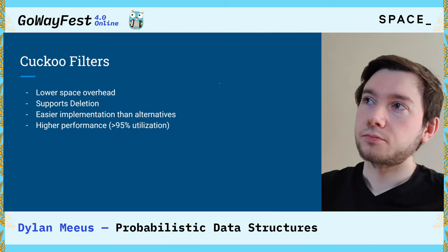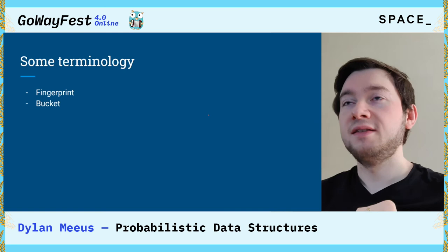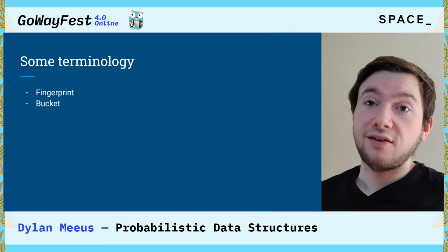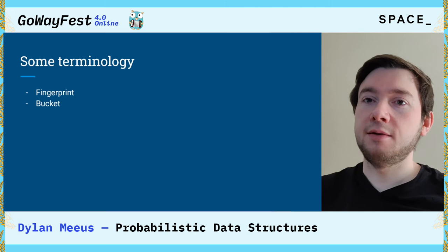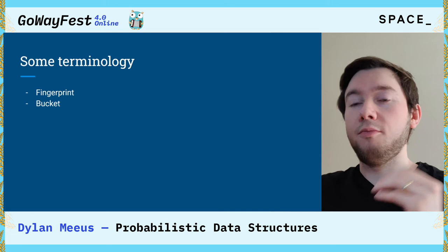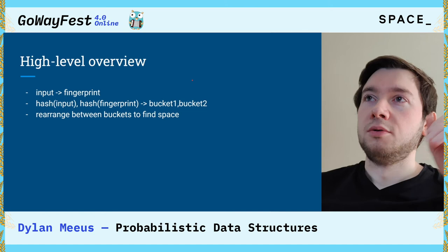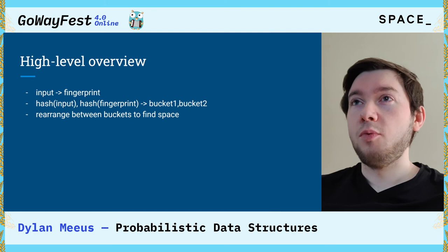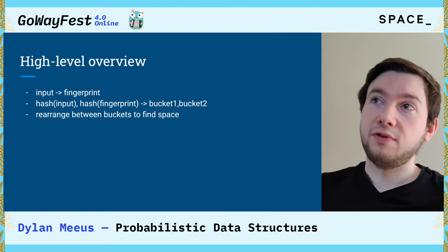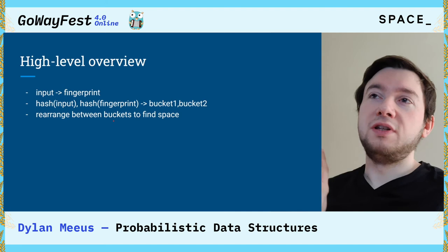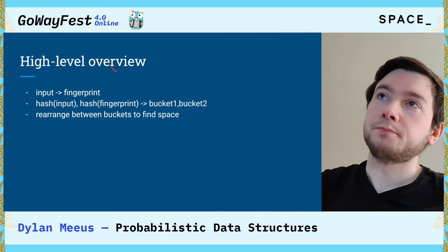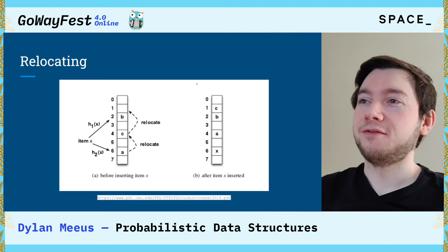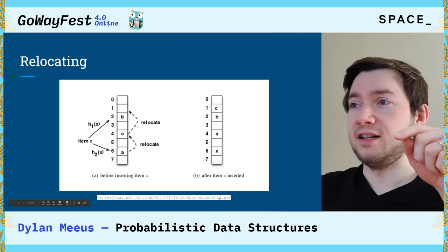Some terminology: a fingerprint is a unique identifier for a username — not the username itself but an identifier of it. A bucket can be thought of as a bucket in a HashMap sense, where each bucket contains multiple entries and our map has multiple buckets. At a high level, we need to generate a fingerprint of the input, take two hashes — one of the input and one of the fingerprint — and make them correspond to two different buckets. If the buckets are full, we start rearranging elements to find empty spaces. This relocation is illustrated in a paper published in 2014, linked at the bottom of the slides.